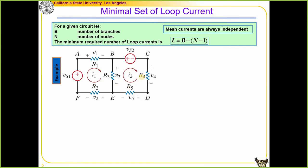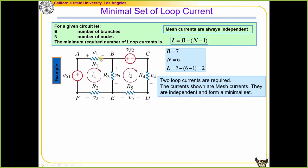In most cases, you don't need that formula — it's always a good idea to start from mesh currents. Count how many meshes you have; that tells you how many mesh equations you need. For this example, we have seven branches and six nodes: 7 minus 6 minus 1 equals 2. This implies a minimum of two mesh currents are needed to solve the problem. With two meshes identified, we define these two mesh currents and that's sufficient.